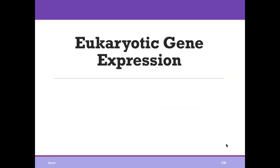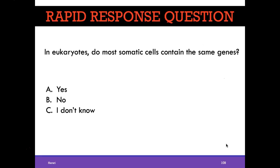In eukaryotes, do most somatic cells — body cells — contain the same genes? The answer is yes. Almost all of your body cells, with the exception of immune cells which produce different antibodies and are not genetically identical, have the same genes. Your hair cells, eye cells, and muscle cells have the same genes as your skin cells.